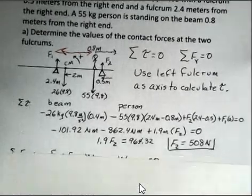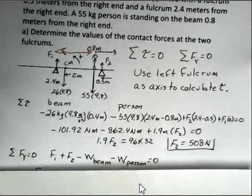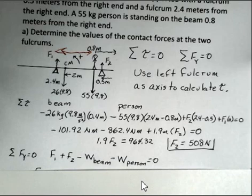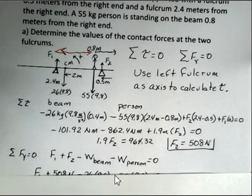Now we go to the sum of the forces in the y-direction equals 0 equation. The two upward forces, F1 and F2, are counterbalancing the two downward weights. I put these in as a negative. When I add up all the forces, that has to add to 0. The weight of the beam is a negative number. The weight of the person is a negative number.